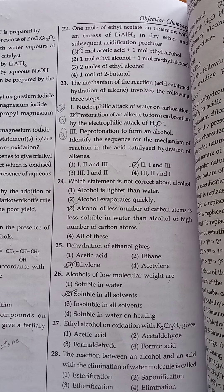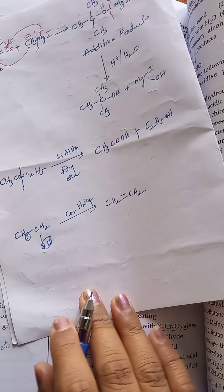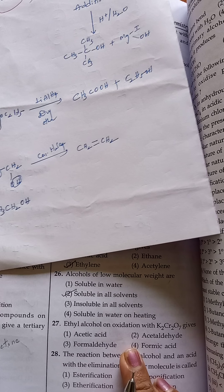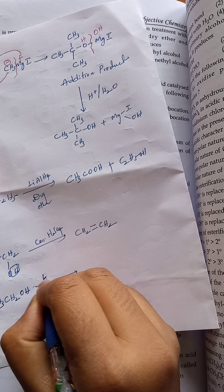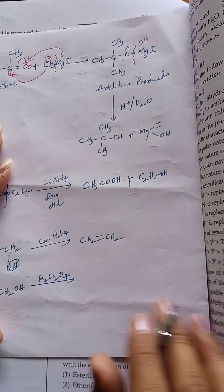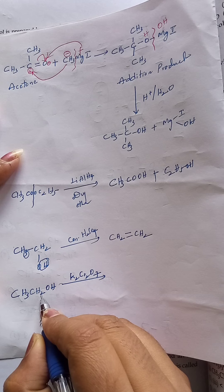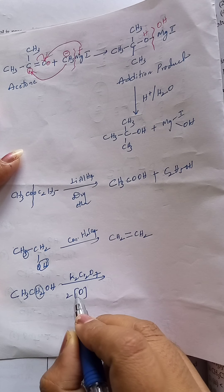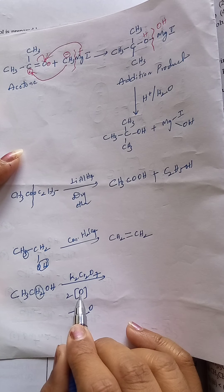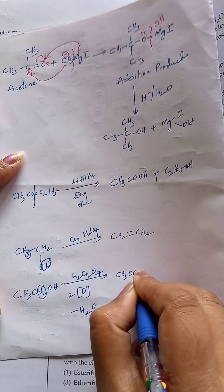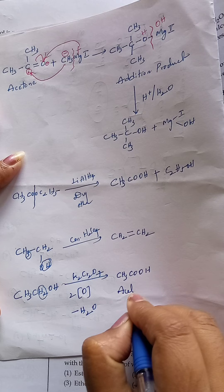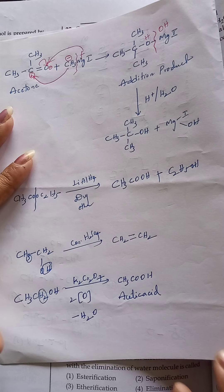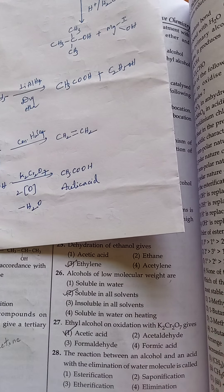Ethyl alcohol on oxidation with K2Cr2O7 gives what? Take ethyl alcohol CH3CH2OH. It is undergoing oxidation in presence of K2Cr2O7 as an oxidizing agent. Two hydrogens are eliminated requiring two nascent oxygens — one reacts with H to eliminate as H2O, and one more oxygen is added, converting to CH3COOH. This is acetic acid. So oxidation of ethyl alcohol with K2Cr2O7 always gives acetic acid. Answer is the first one.